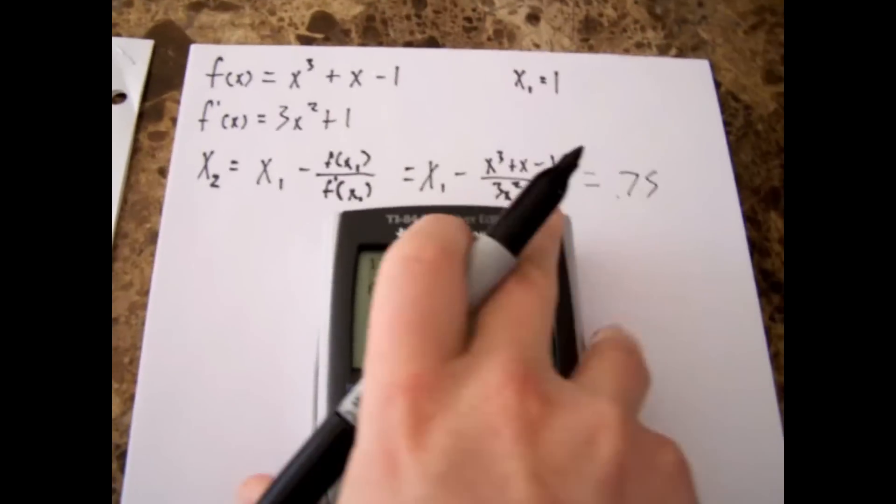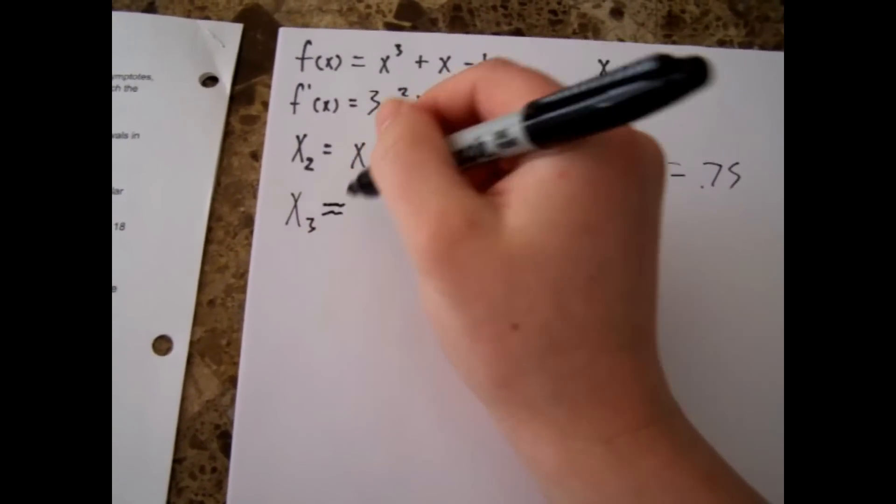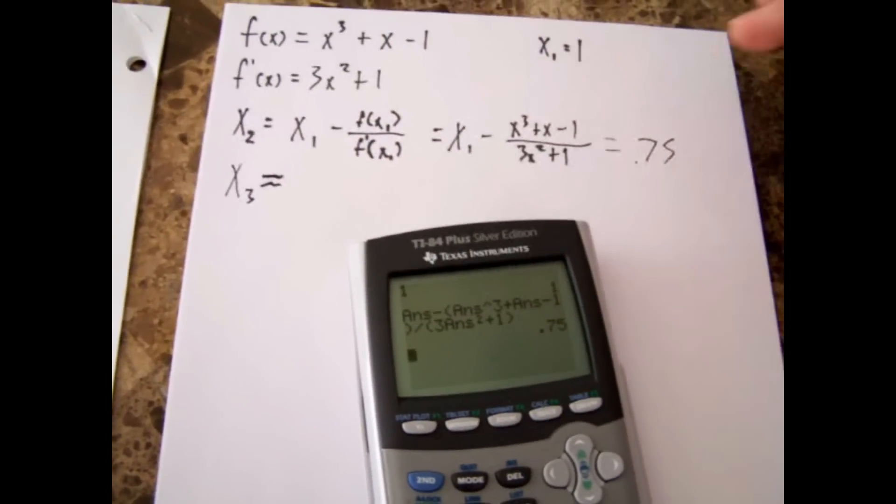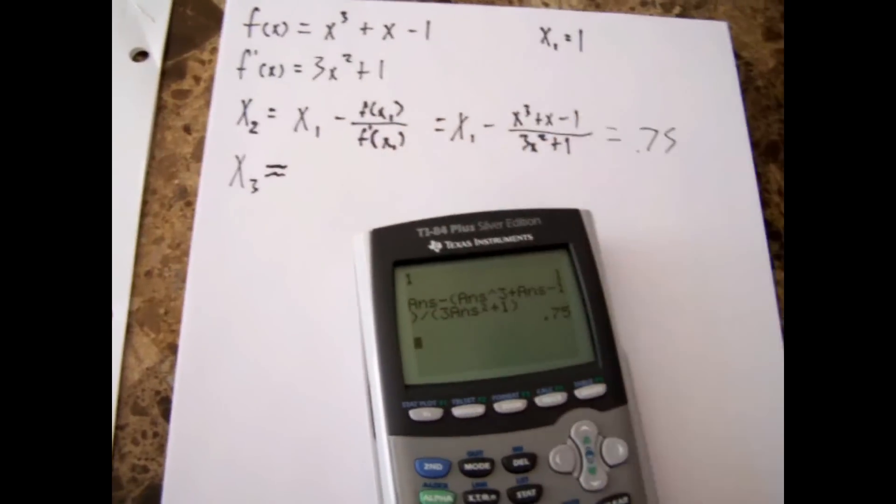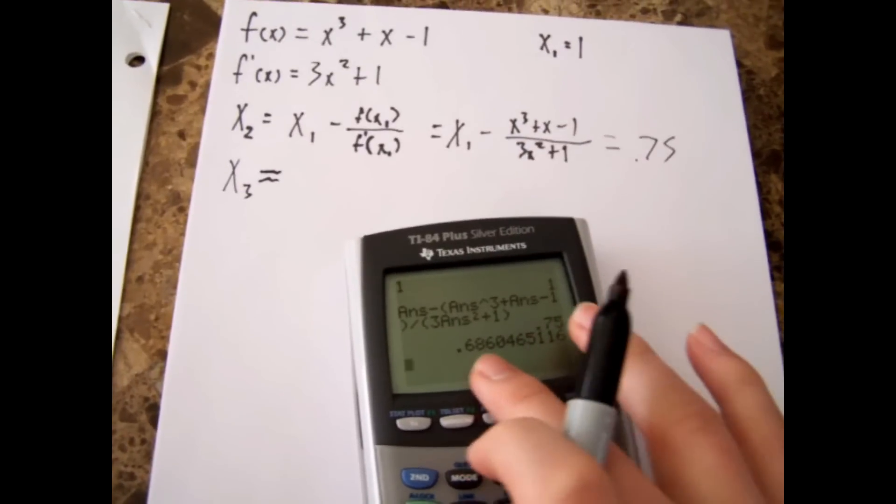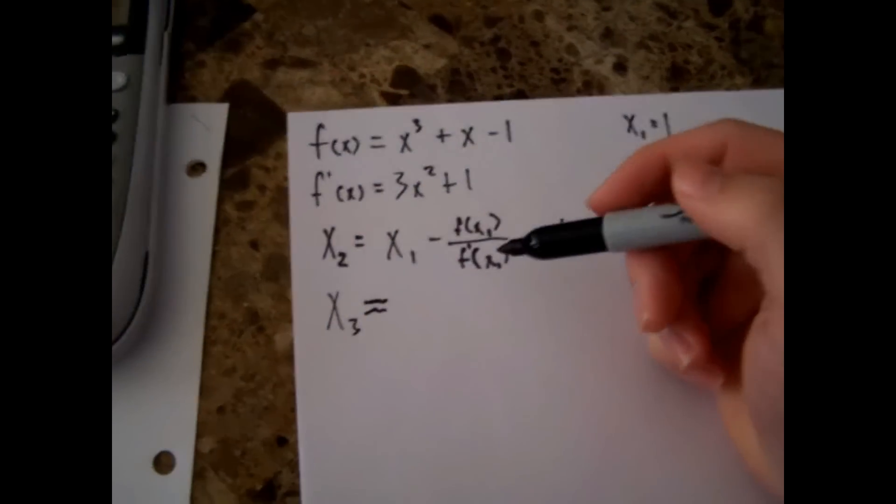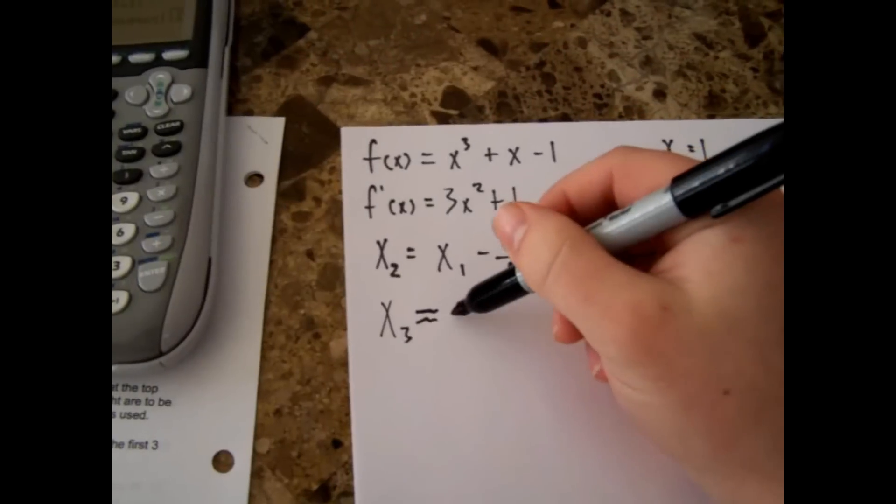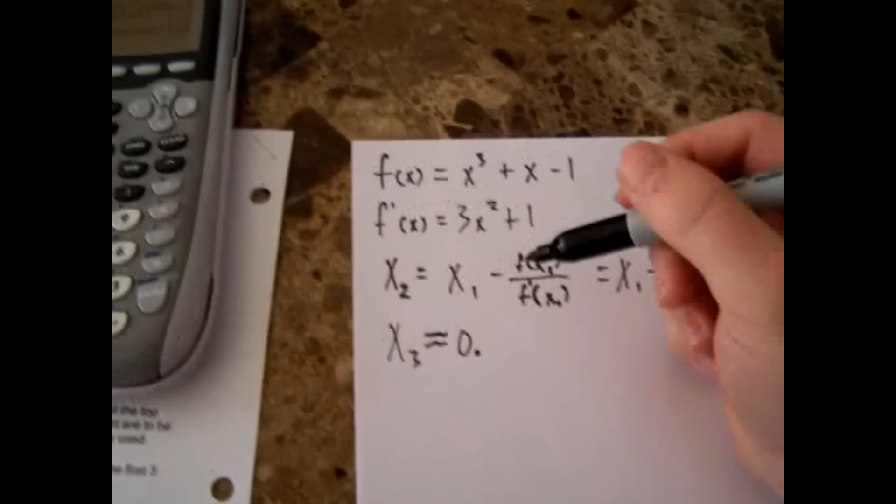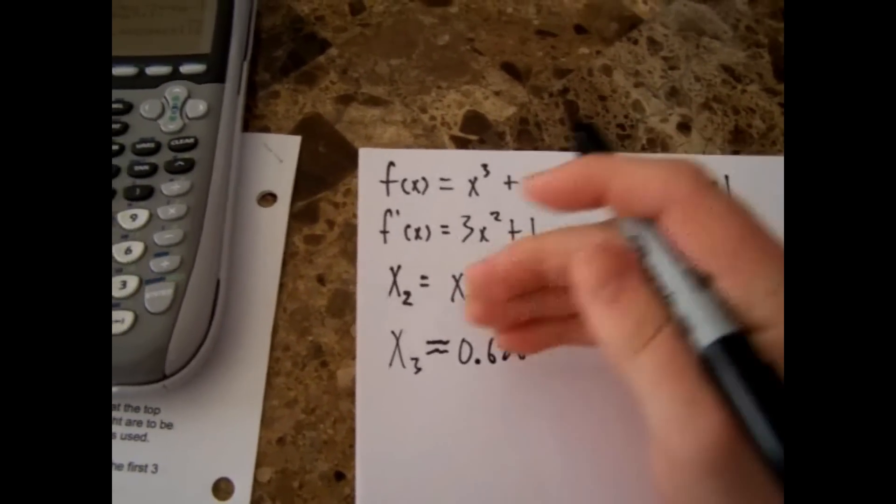Now all you have to do to get your x₃ is just hit enter again on your calculator, cause you've already got the algorithm in to get all of your answers. All you have to do from this point on is hit enter. And your second iteration is going to be 0.6860465116. But in the question it tells you to round to the nearest thousandth of a decimal place. So you can just put the first three digits, which was 0.686.